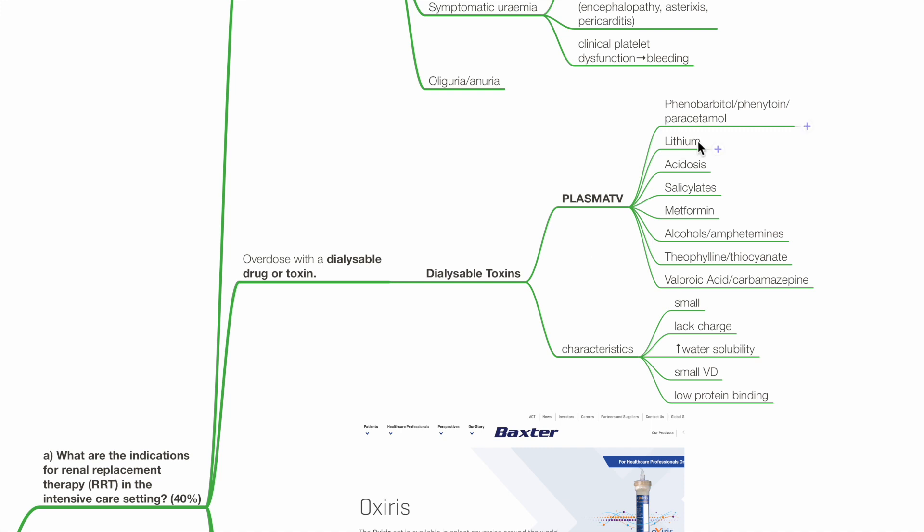P for phenobarbital, phenytoin or paracetamol, L for lithium, A for acidosis, S for salicylates, M for metformin, A for alcohols or amphetamine, T for theophylline and V for valproate or carbamazepine.